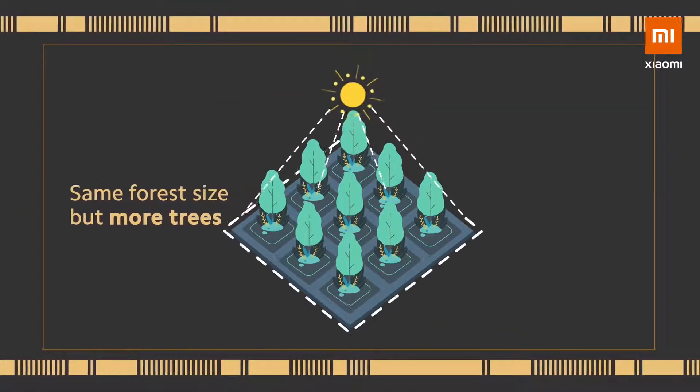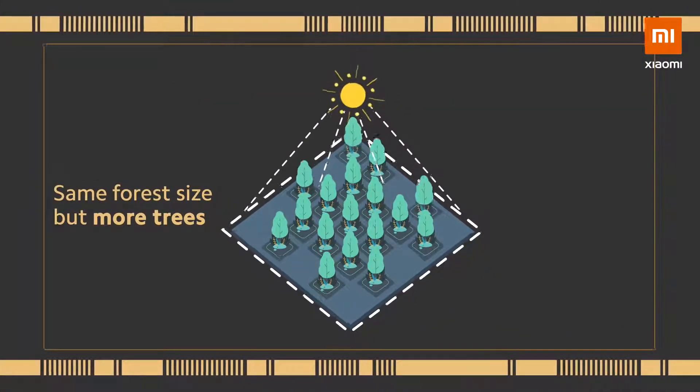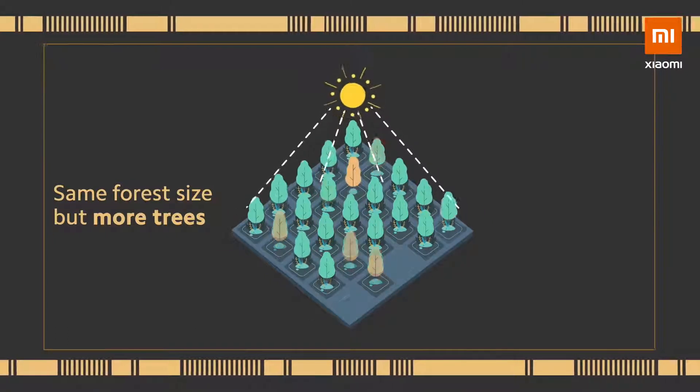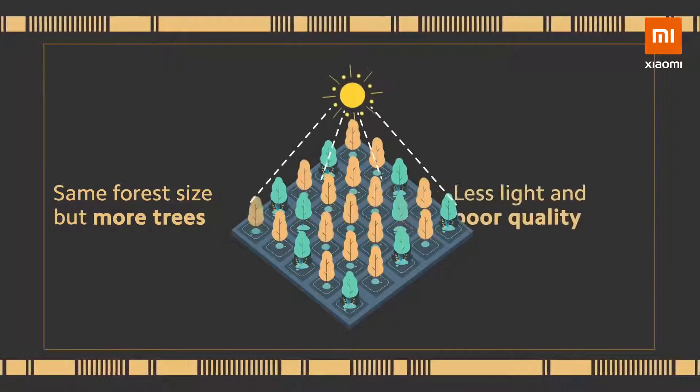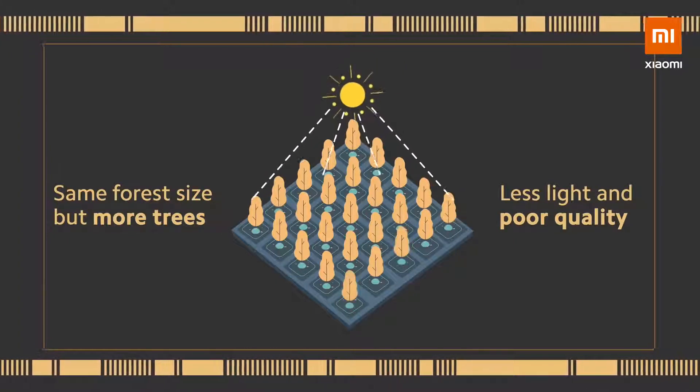If we simply increase the number of trees, the size of the forest stays the same because the trees won't have a lot of space to grow. They will take in less light, which will affect the size of each tree.